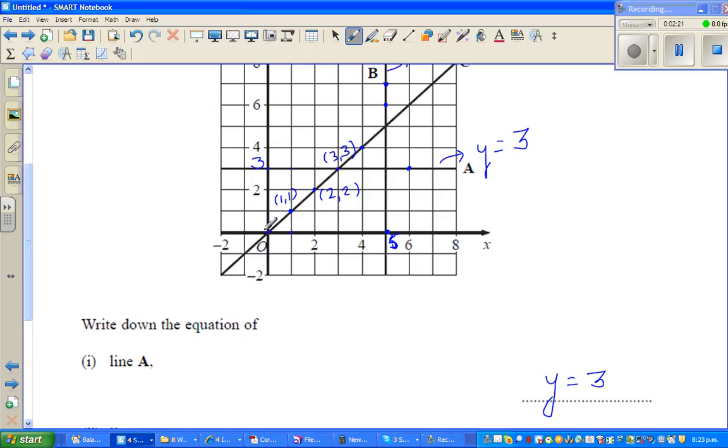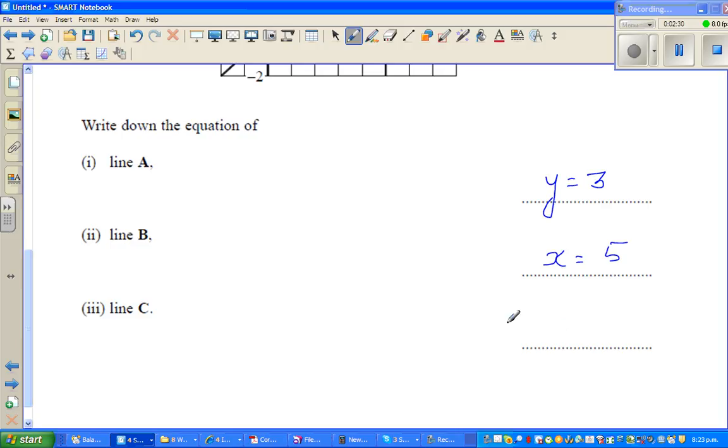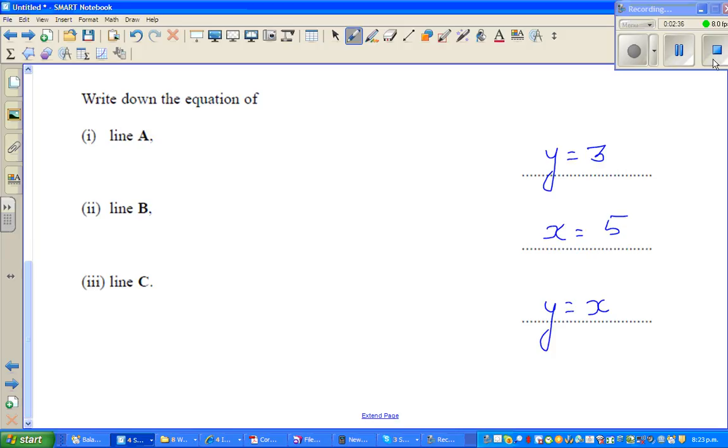So this point is (0, 0), and so on. So you can say your x coordinate and y coordinates are equal. So you can say the equation of line C is y equals x. Just like that. See you in the next video.